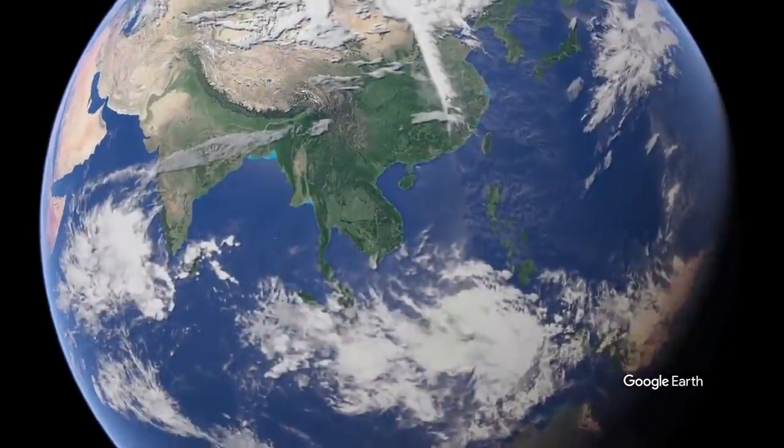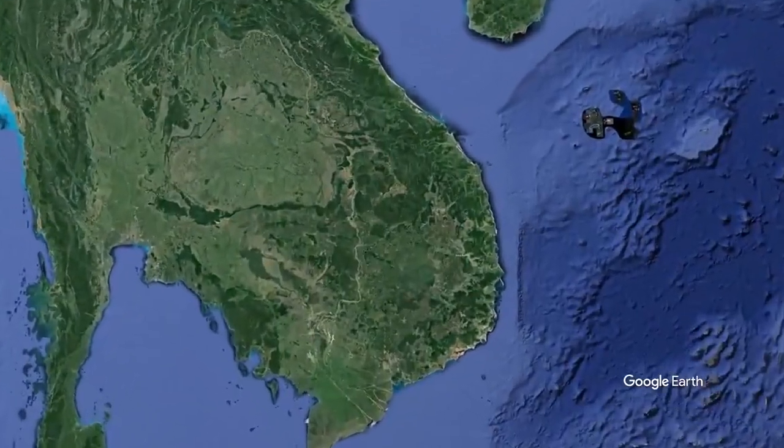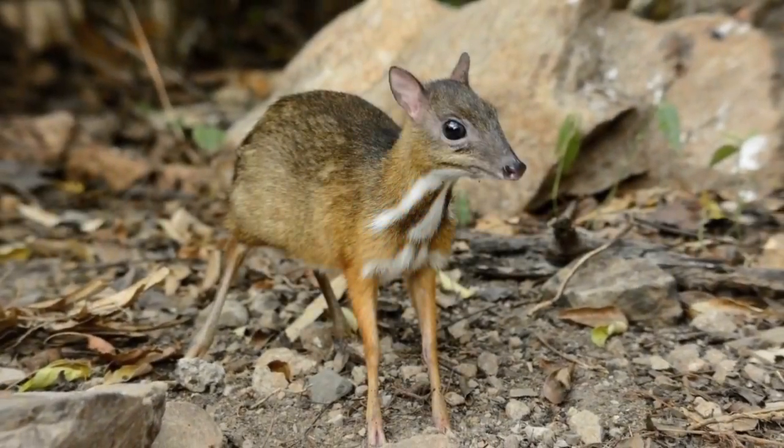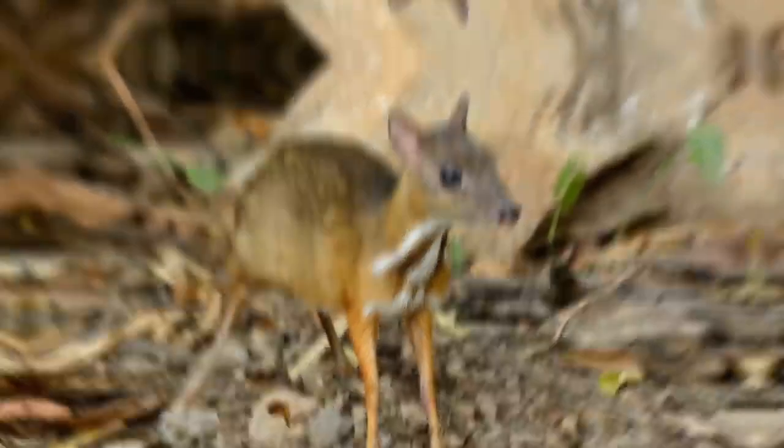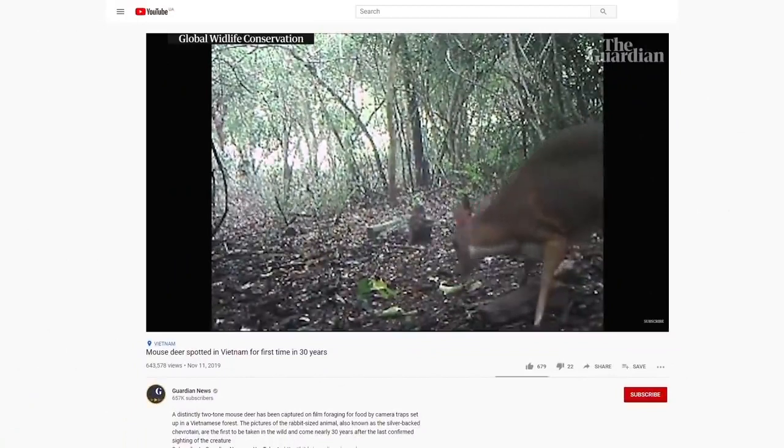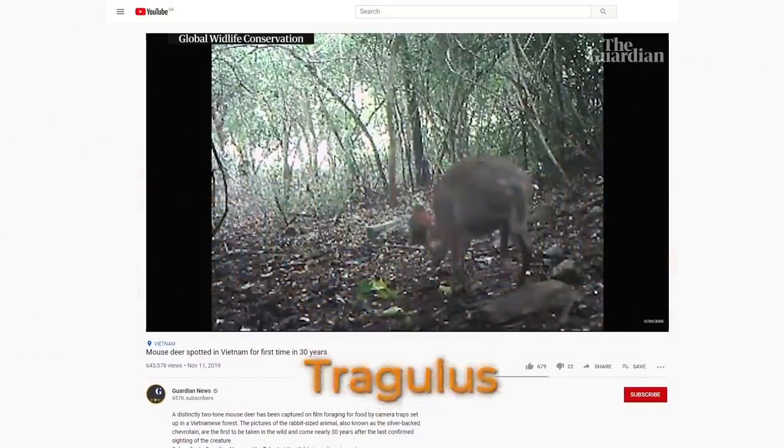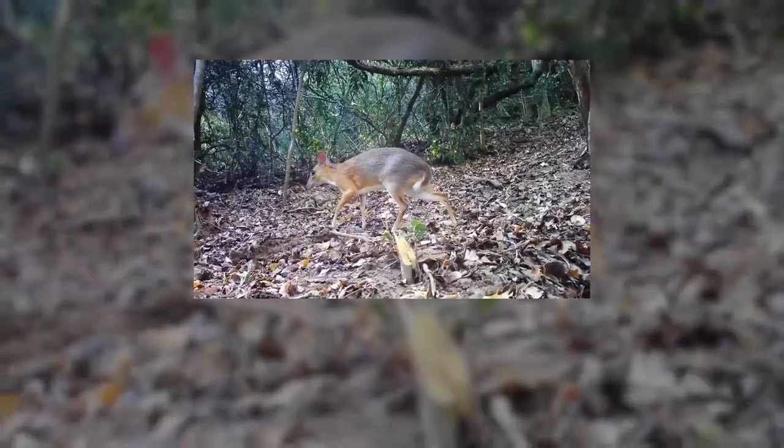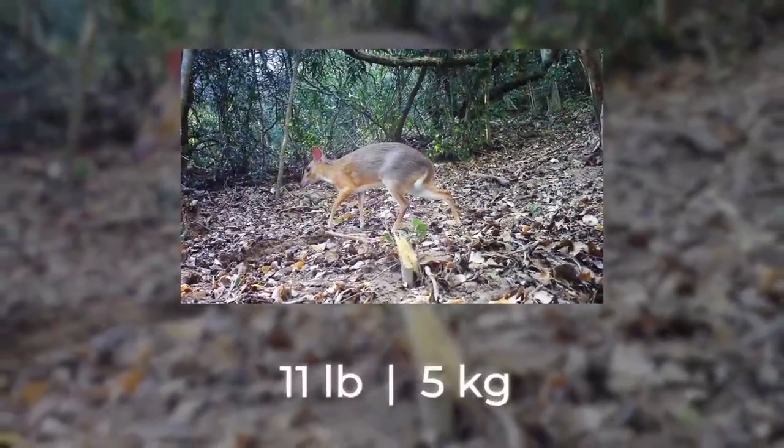But there's also good news. In Vietnam, they found a unique tiny deer with fangs, which was considered extinct for more than 30 years. The Vietnam mouse deer belongs to the deer family, tragulus, and is the smallest ungulate, the size of a hare, and weighs up to 11 pounds or 5 kilograms.